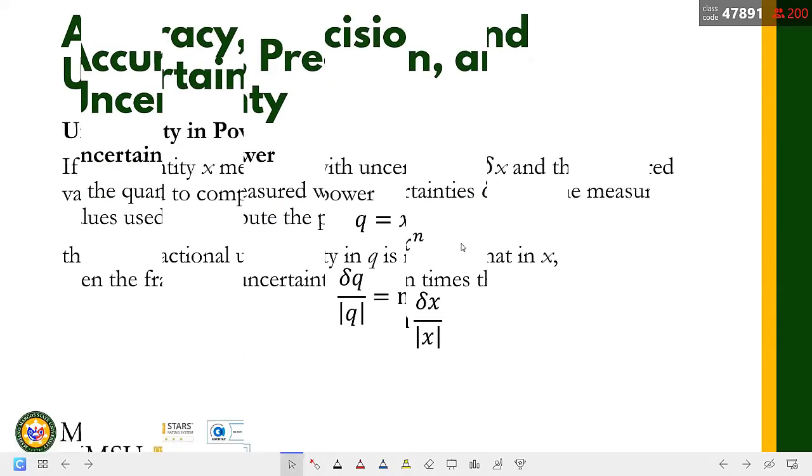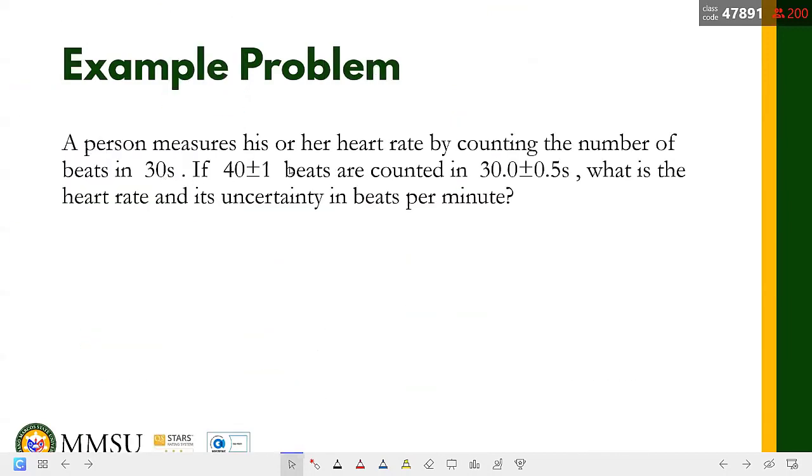Let's take a look at this one. A person measures his or her heart rate by counting the number of beats in 30 seconds. If 40±1 beats are counted in 30.0±0.5 seconds, what is the heart rate and its uncertainty in beats per minute?